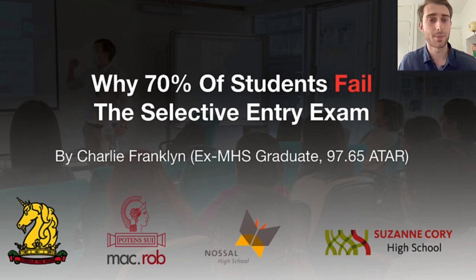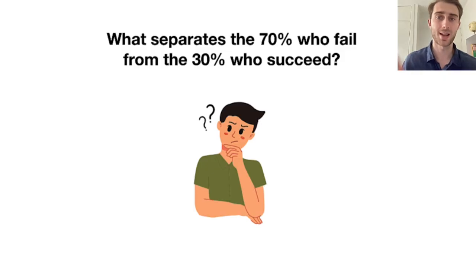But naturally that brings up the question as to what separates the 70% who fail from the 30% who actually succeed. What do these high achievers, the ones who actually do get into these schools, what do they do differently? Having been in the education space for a number of years now and having sat this exam myself and seen students who got in, but also over the last few years seeing students who didn't get in, I noticed a trend between students who did get in and the ones that didn't.